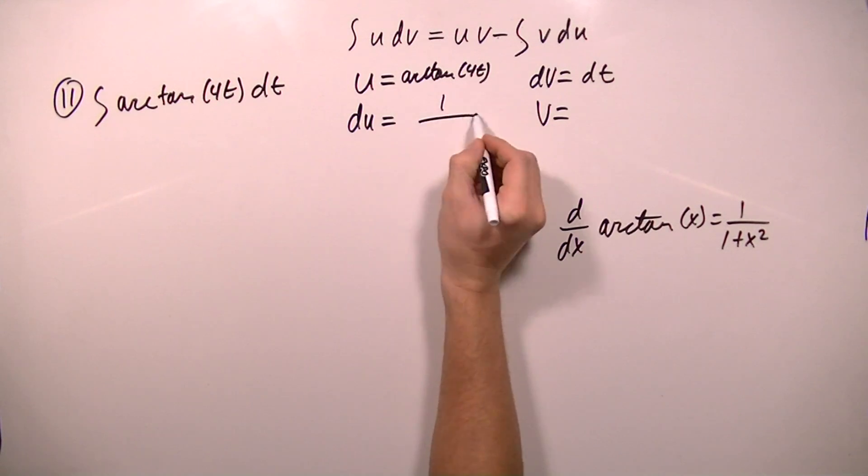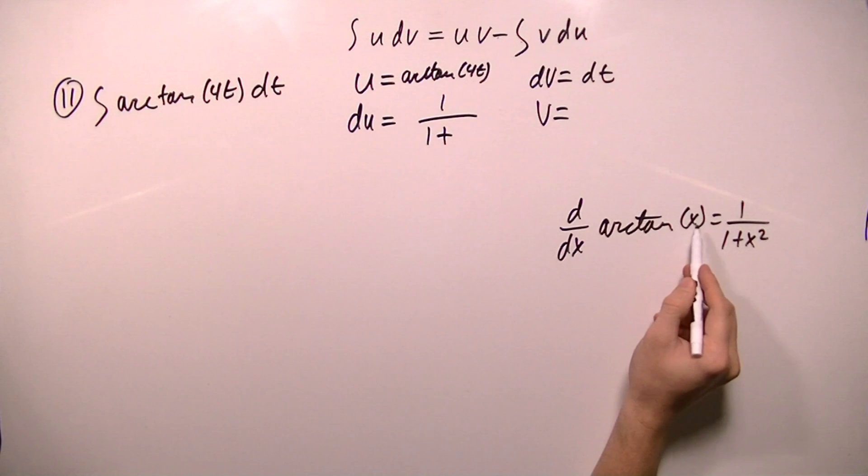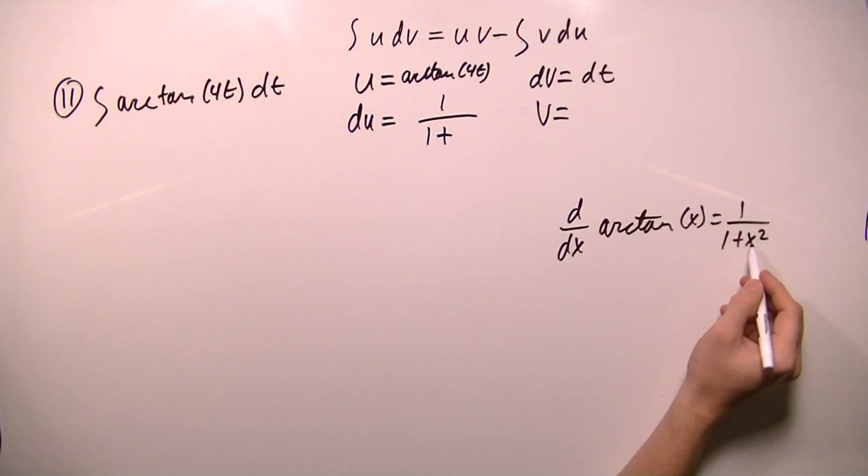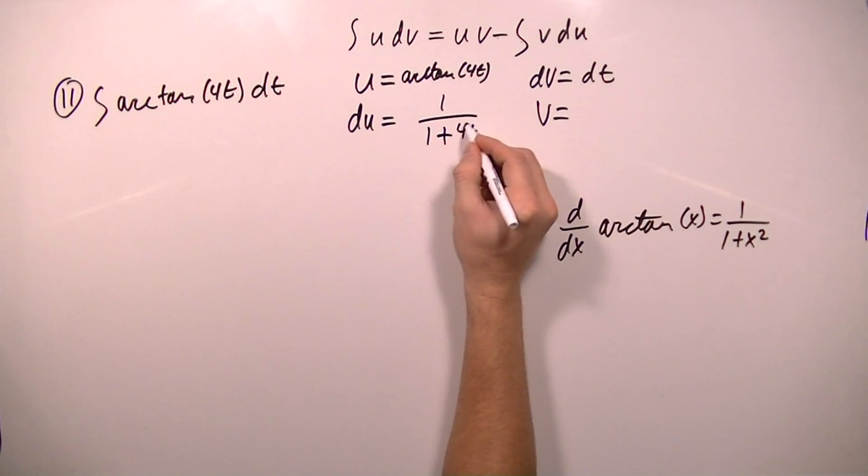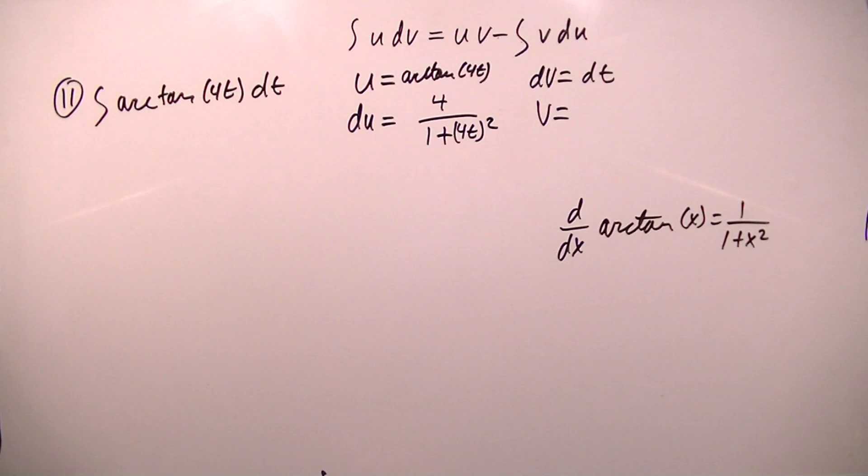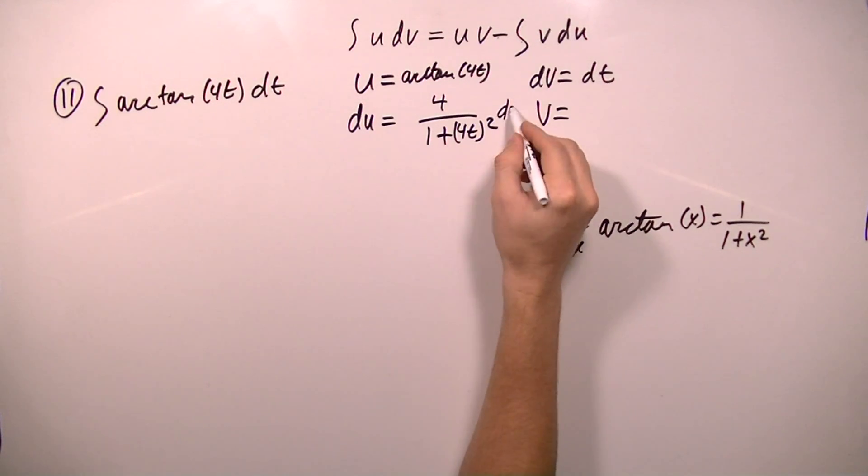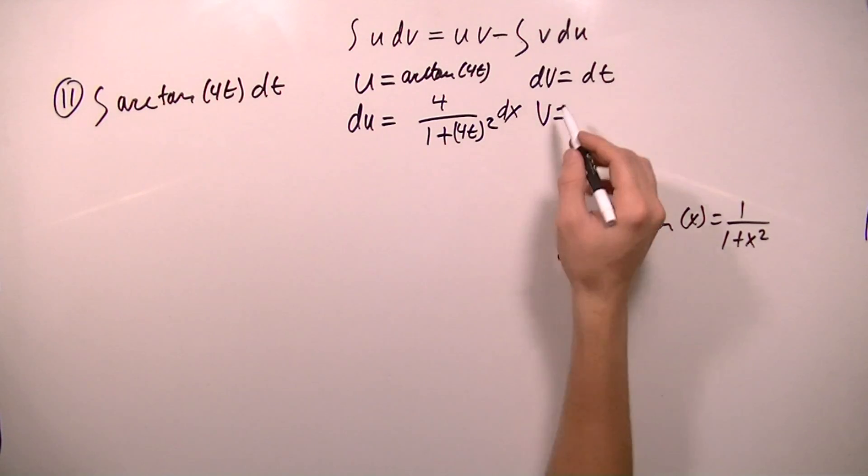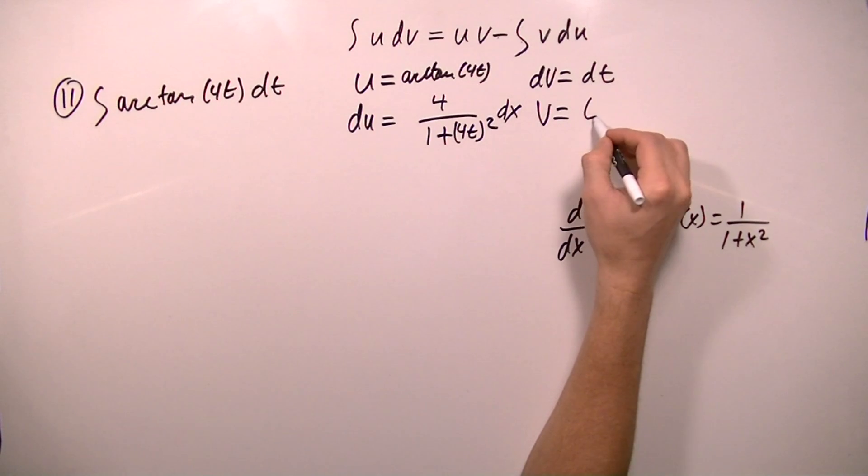So I'm going to get 1 over 1 plus, and I don't have x, I have 4t. So this is going to have to be 4t and all of that squared. And because it's the chain rule, I'm going to have to multiply by the derivative of the inside here. So the derivative of 4t is 4. So I'm going to change this to a 4. And of course, dx. And the integral of dt will just be t.